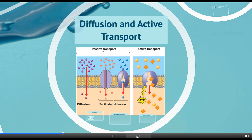In order for cells to maintain homeostasis, they need to move things in and out of the cells. There are a couple of different ways that they transport things: passive transport and active transport.